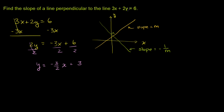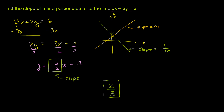So the slope of the line they gave us — now that we've put it in slope-intercept form — is negative 3 halves. The slope of a line perpendicular to this will be the negative reciprocal. The negative of a negative is a positive, and the reciprocal of 3 halves is 2 over 3. So the negative reciprocal of negative 3 halves is positive 2 over 3. That's the slope of a line perpendicular to this one.